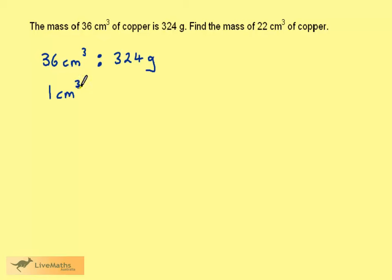So 1 cm³ would be 324 divided by 36 g. We want 22 cm³.